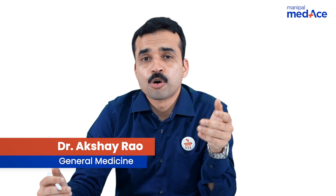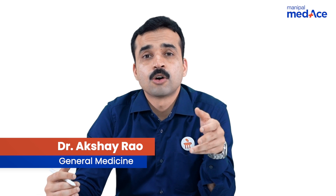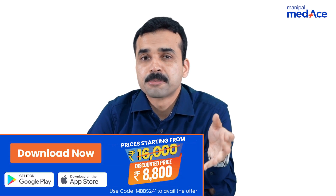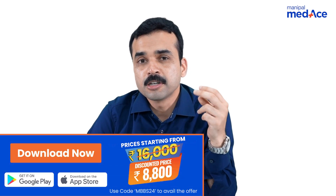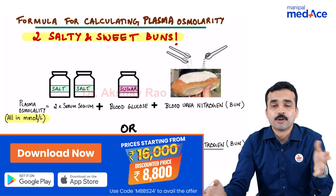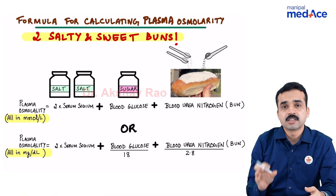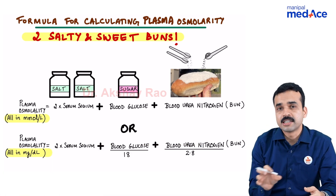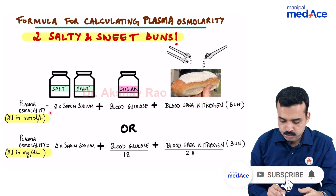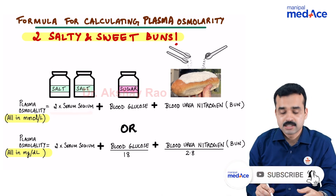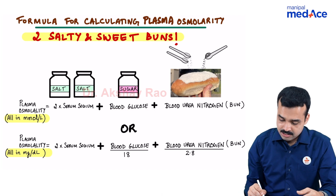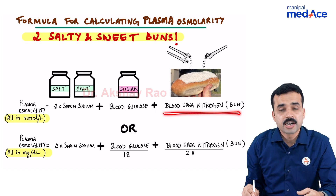Students, how do you remember the formula for finding out the plasma osmolality? It's simple — just remember two salty and sweet buns. When you measure all the entities in millimole per litre, the formula is: 2 into serum sodium, plus the blood glucose level, plus the blood urea nitrogen level.